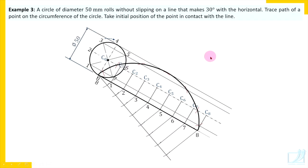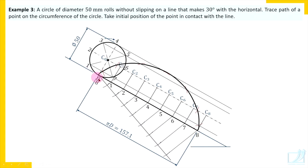Insert all dimensions. The diameter of the circle is 50 millimeters and the distance is pi*d. This guiding line is at an angle of 30 degrees with the horizontal. You should insert dimensions after completing the drawing.